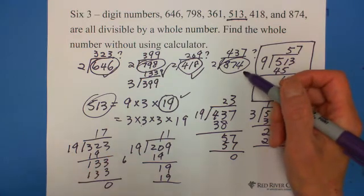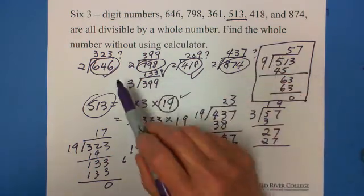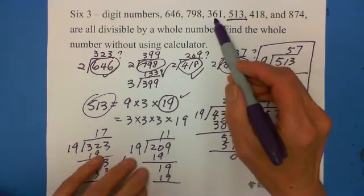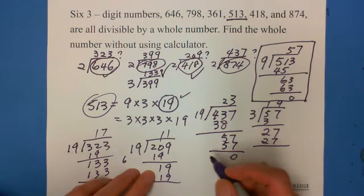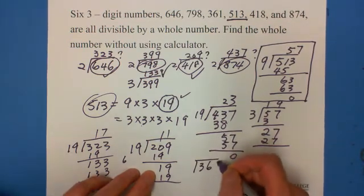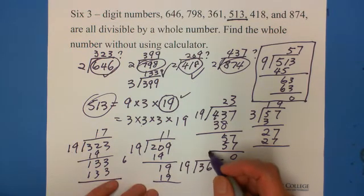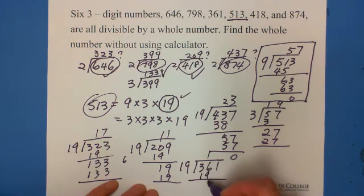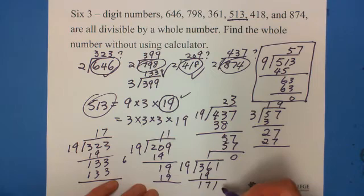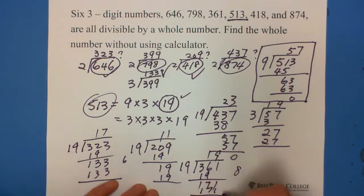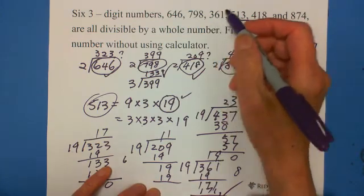And there's another number, 361. Let's try 361 divided by 19. This is 2 times 19 is 38, 1 times 19 is 19. Here is 171. 9 times 19 is 171. 9 times 9 is 81, 1 times 9 is 9 plus 8 is 17. Yes, that's where all these are divisible by 19.